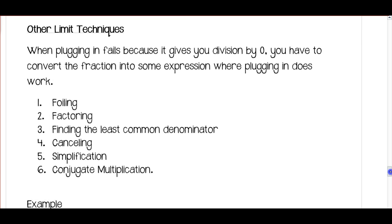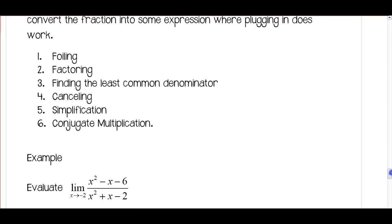Other limit techniques are needed when plugging in fails because it gives division by 0. You have to convert the fraction into an expression where plugging in does work. There are 6 techniques: foiling, factoring, least common denominator, canceling, simplification, and conjugate multiplication. If direct substitution isn't going to work, you have to consider these techniques. If you have any questions, write them down and ask, and we'll see you in the next video.